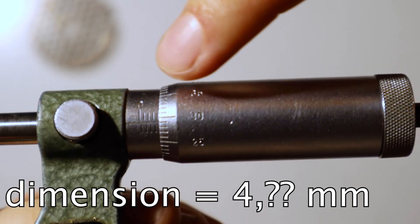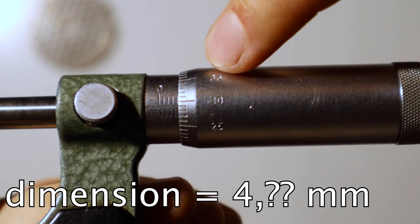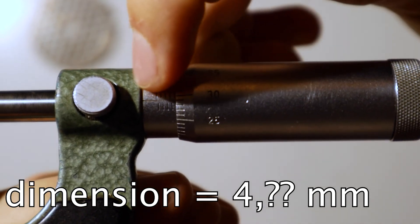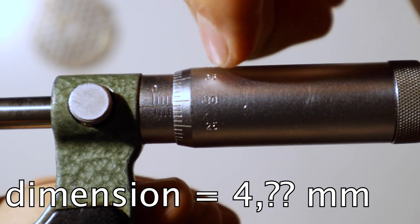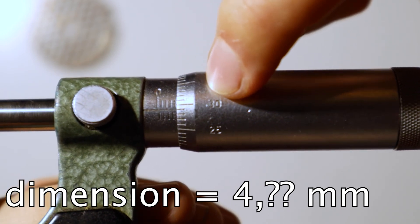And to see where, you're going to look at this graduation on the thimble and just have a look at where it lines up with this zero zero line here. So as you can see mine lines up at 29 so I know I'm at 4.29 millimeters right now for this part.